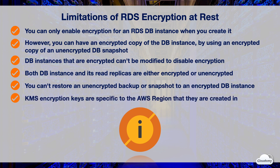KMS encryption keys are specific to the AWS region that they are created in. For example, to copy an encrypted snapshot from one AWS region to another, you must specify the KMS key of the destination region.